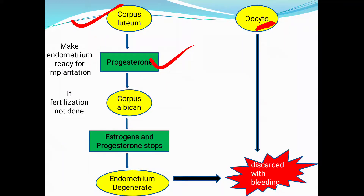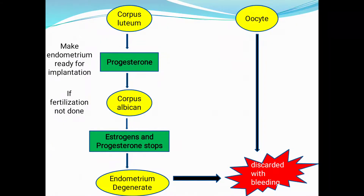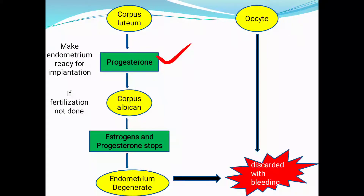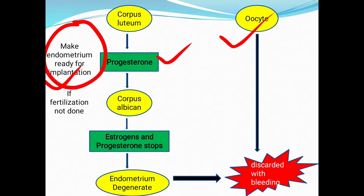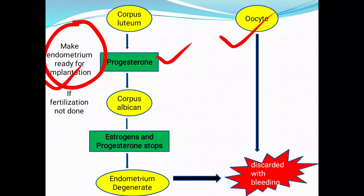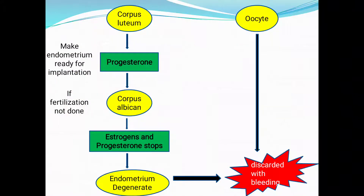Meanwhile, the corpus luteum starts to synthesize the hormone progesterone. While estrogen started the production of endometrium in the earlier stage, progesterone now completes the production of endometrium and makes it ready for implantation. The body is now fully ready — the oocyte is ready in the oviduct and the endometrium is ready in the uterus. If sperm enters and fertilizes the egg, a zygote forms, travels to the endometrium, and develops into an embryo and then a fetus.